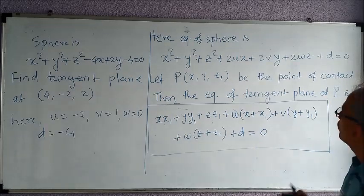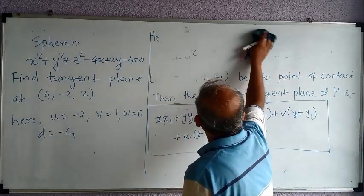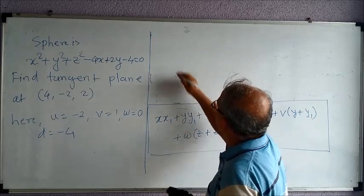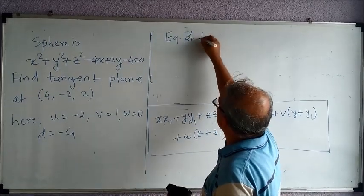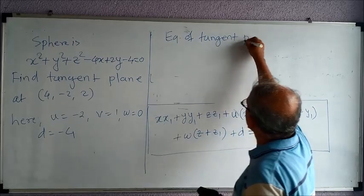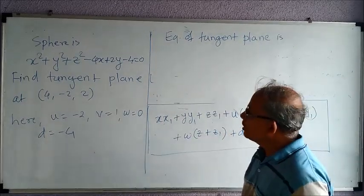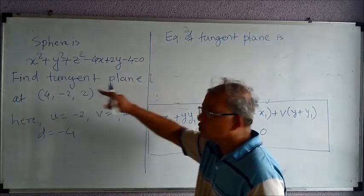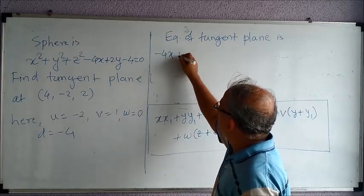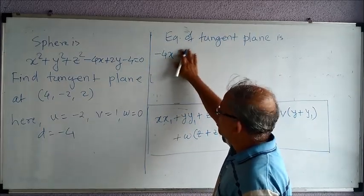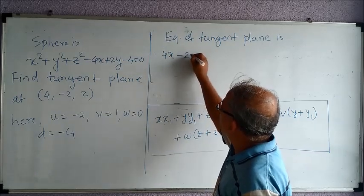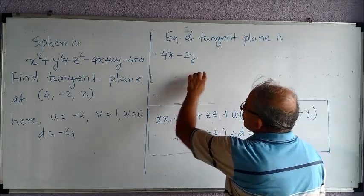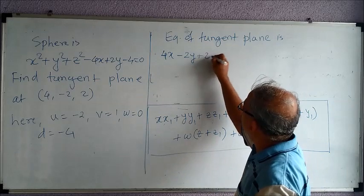So let us implement all this in this formula. And we can now write down the equation of tangent plane as: See, x into x₁. So x₁ will be 4, y₁ is -2, z₁ is 2. So 4x - 2y, sorry, it is 4x - 2y plus 2z. x into x₁, y into y₁, plus z into z₁.